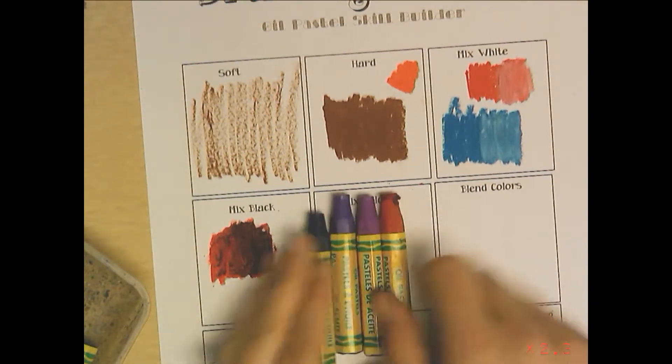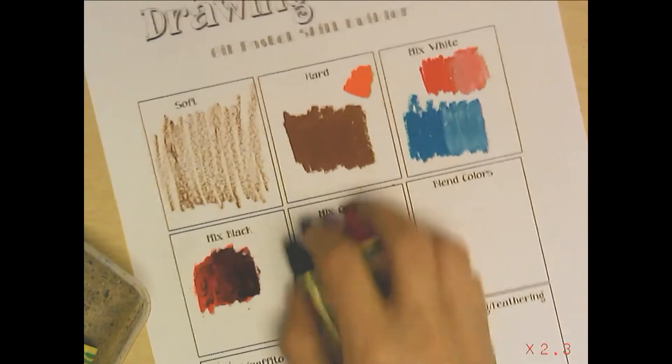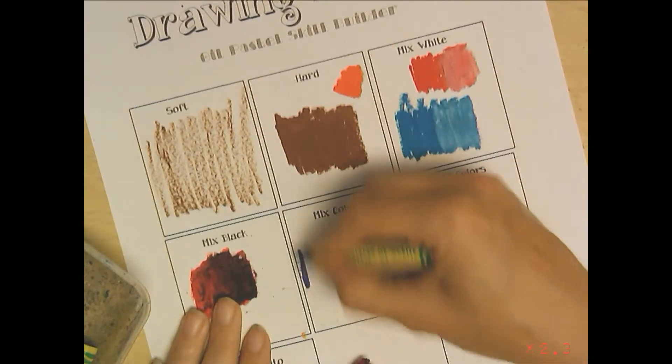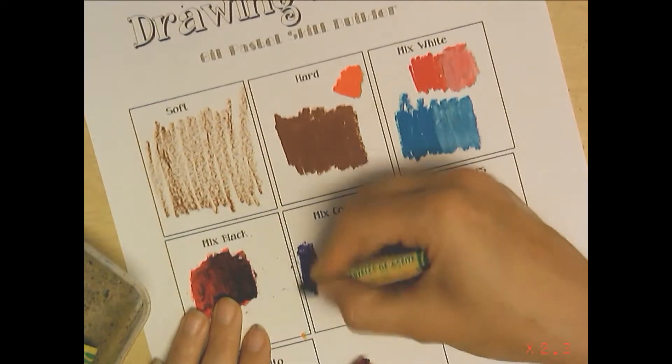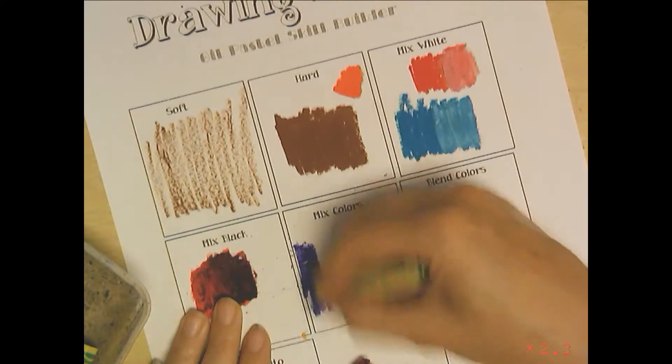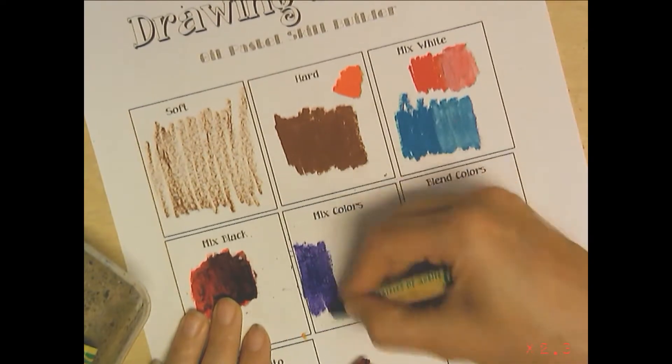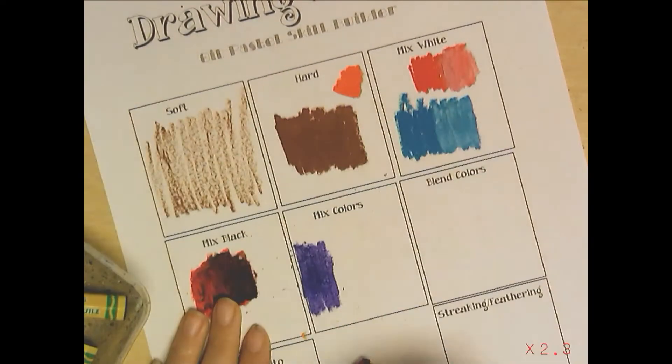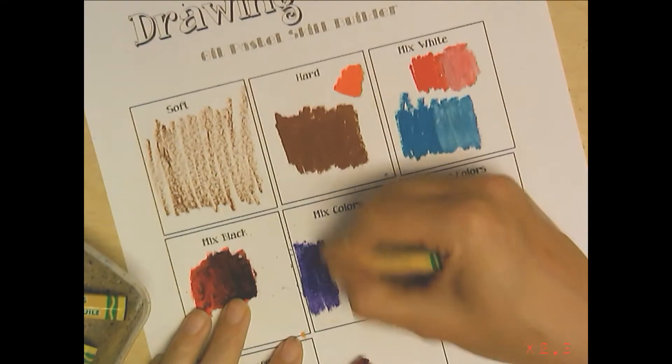I will start here with blue violet and color a little bit, color back to there. Now I take my next color and color a little bit on top of that color.